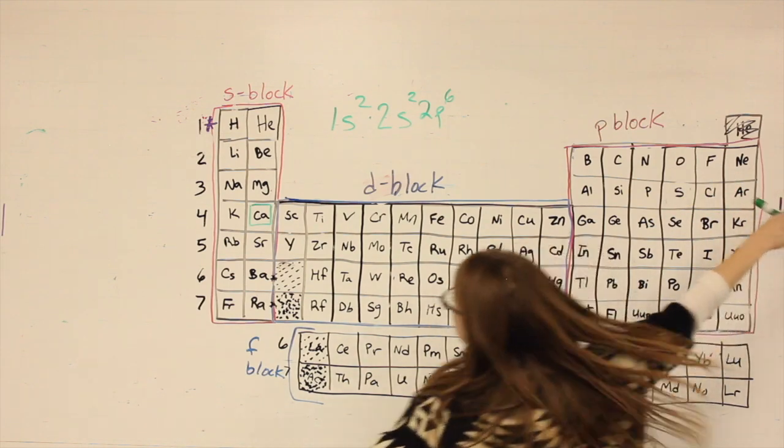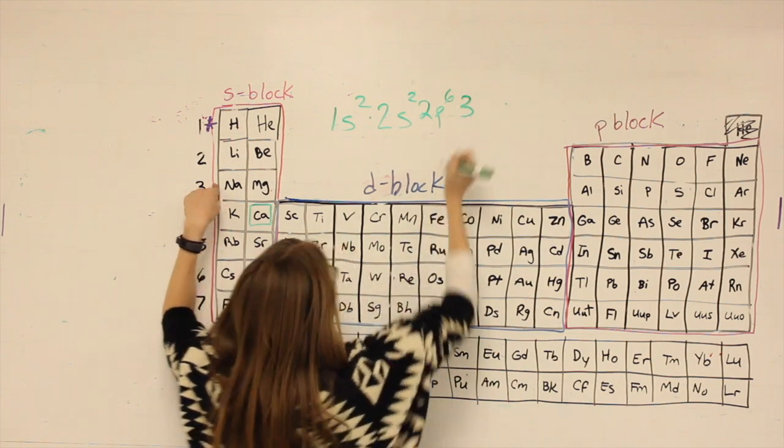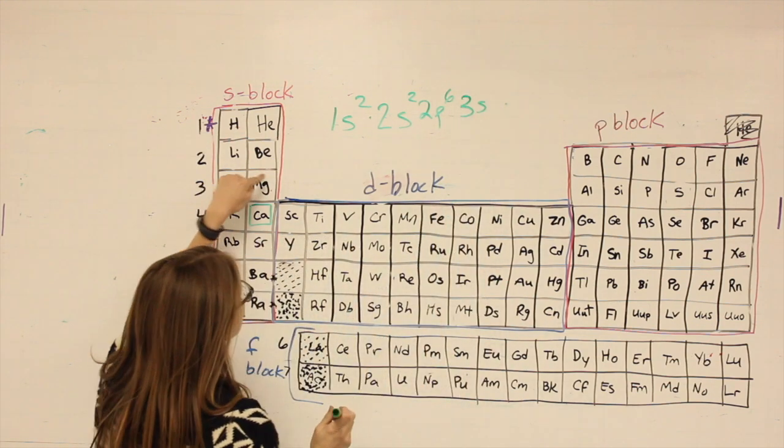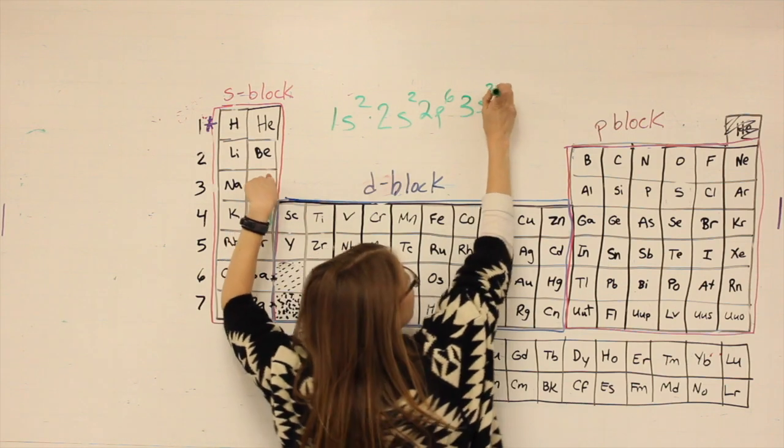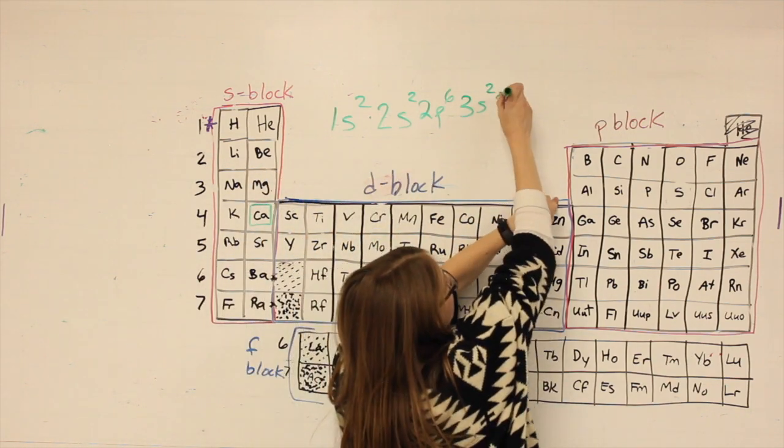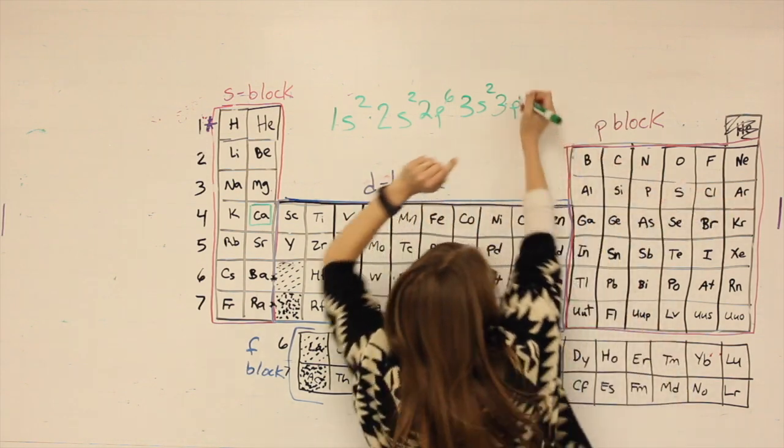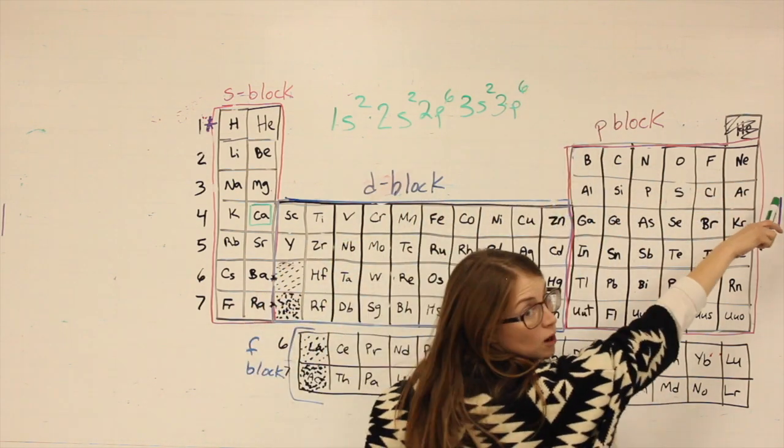Now I'm here. What row? Three. What letter? S. How many spaces? Two. Still not at calcium. Keep going. Third row, P-block, six spaces. That got me through argon.